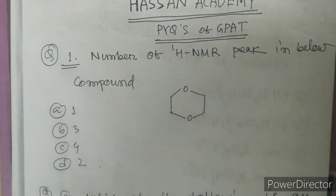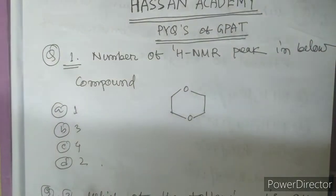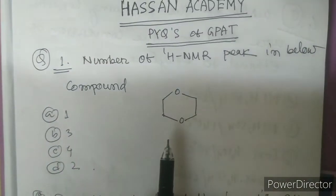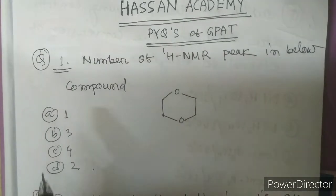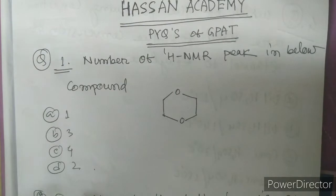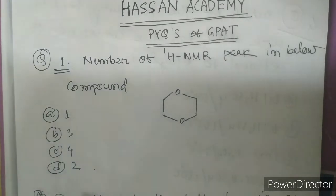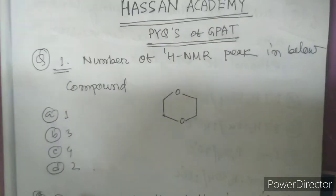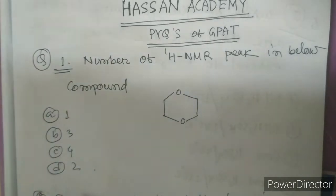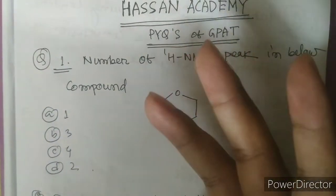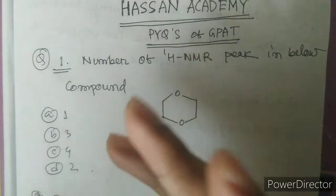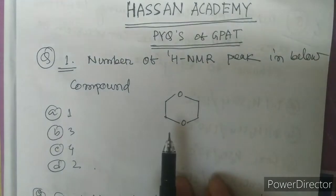Let's start. Question one: number of HNMR peaks in the below compound. They have given a compound and are asking how many HNMR peaks — options are one, three, four, two. Whenever you get this type of question asking about HNMR peaks or C13 NMR peaks, you should concentrate on finding the types of hydrogen present. If three different types of hydrogen are present, you get three different peaks.